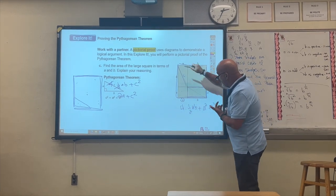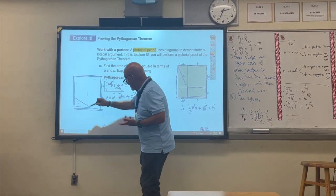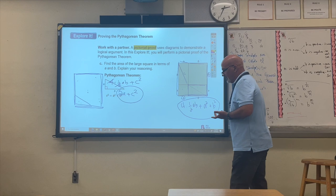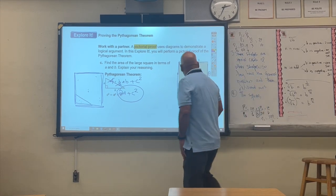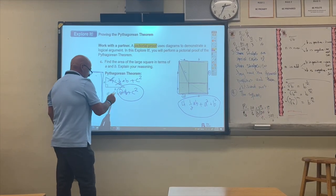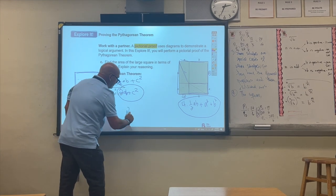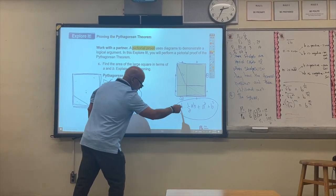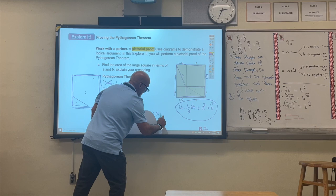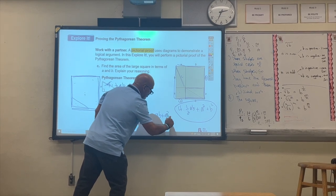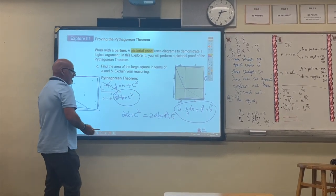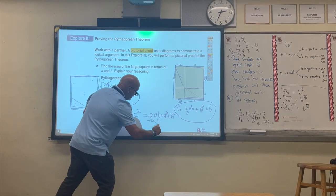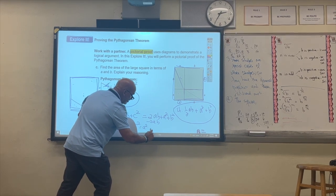Because this square is the same size as the previous one, we can set the two expressions equal to each other. So 2ab plus C squared equals 2ab plus A squared plus B squared. If you subtract 2ab from both sides, what remains is that C squared equals A squared plus B squared.